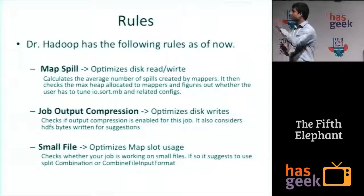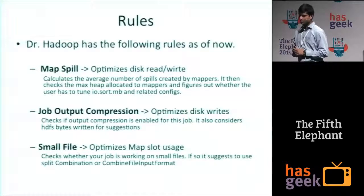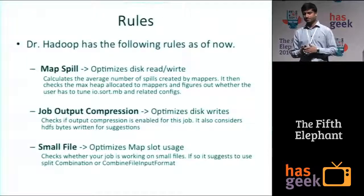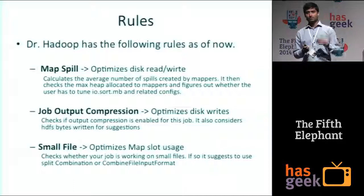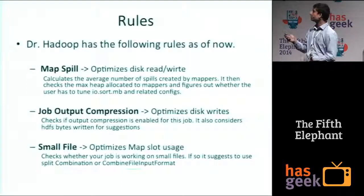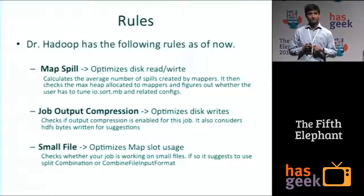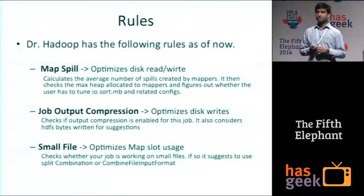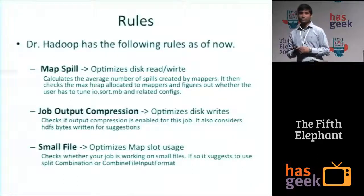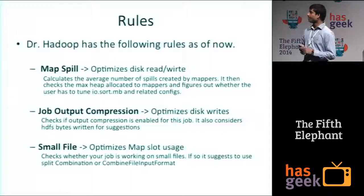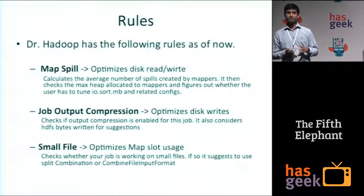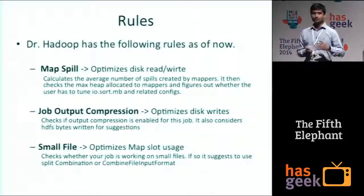Here are the pluggable rules. The first is map spills. In a MapReduce job, every mapper has a sort buffer where it stores intermediate data — the map output — then sorts and partitions it and spills it to disk. The more spills the mapper is creating, the more disk reads and writes will happen, which reduces the performance of the job. What this rule does is calculate the average number of spills your job is creating, and if that average goes beyond a threshold, it's really bad and you need to improve it.